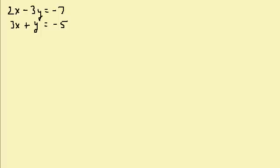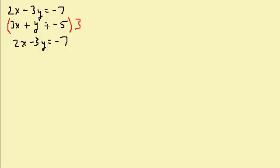Let's take a look at another one. If I add the two equations, I get 2x plus 3x equals 5x, and negative 3y plus y equals negative 2y — neither variable goes out. But since these are equations, I can multiply an equation by a number. I'll multiply the second equation by 3, because 3 times y gives 3y, and then negative 3y plus 3y is zero — the y's go out. So I write the first equation as 2x minus 3y equals negative 7, and multiply the second equation by 3, giving 9x plus 3y equals negative 15.